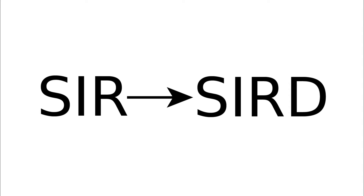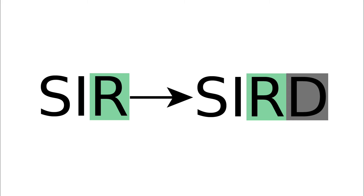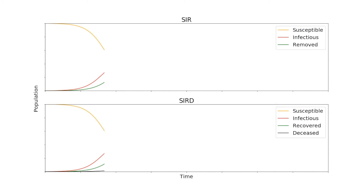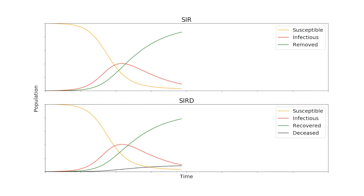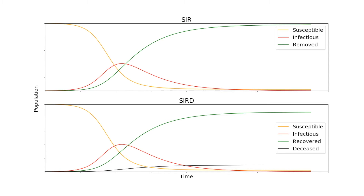There's even more we can do with the SIR model. When modeling diseases with high mortality rates, it's often useful to keep track of how many pass away rather than putting them in the removed compartment with those who recover. Separating the recovered and the deceased allows scientists to perform studies where they predict fatality and how different measures might affect it. The SIRD model takes the removed compartment and splits it between a new recovered compartment and a deceased compartment. The susceptible and infectious lines are exactly the same in both the SIR and SIRD models.